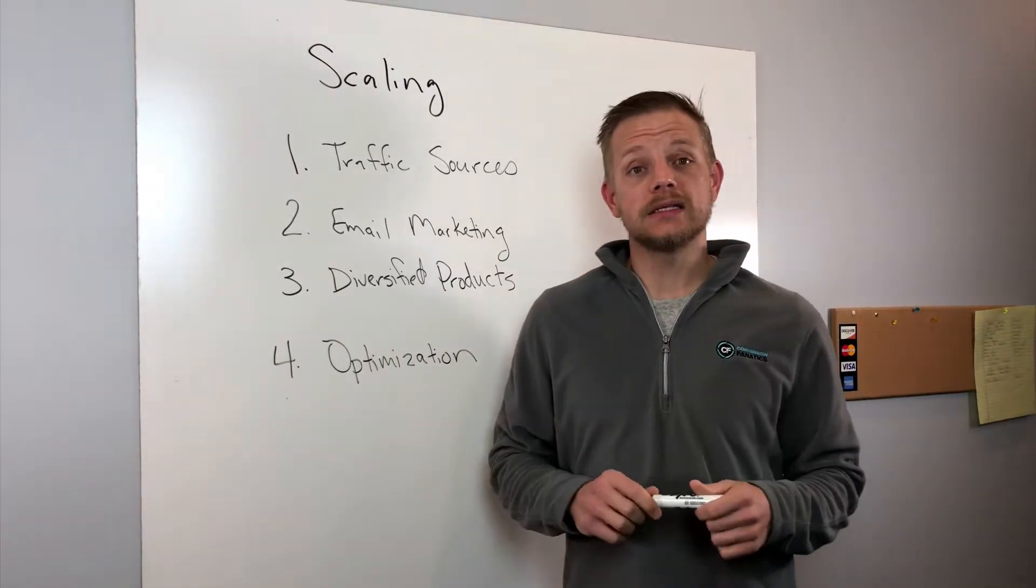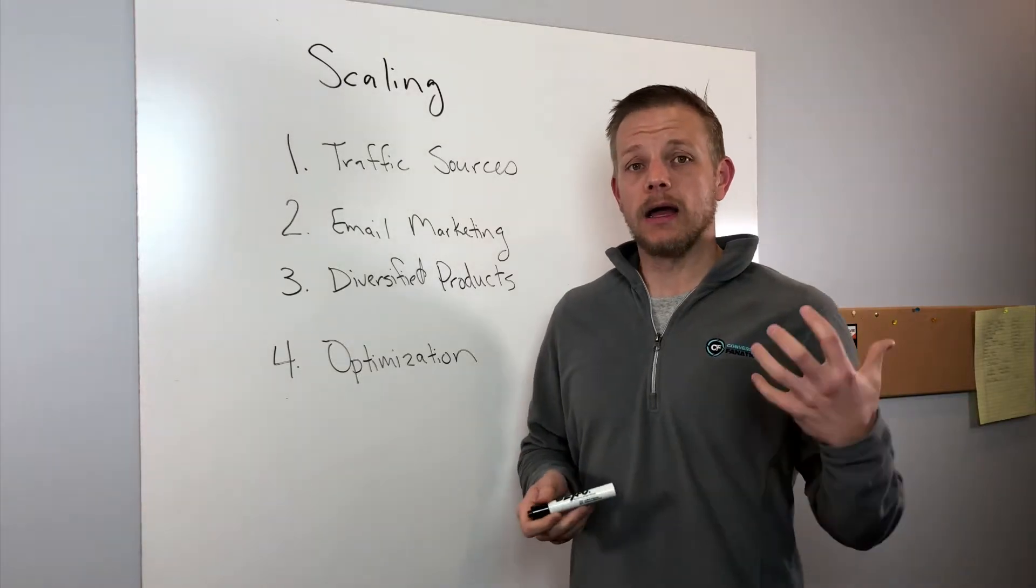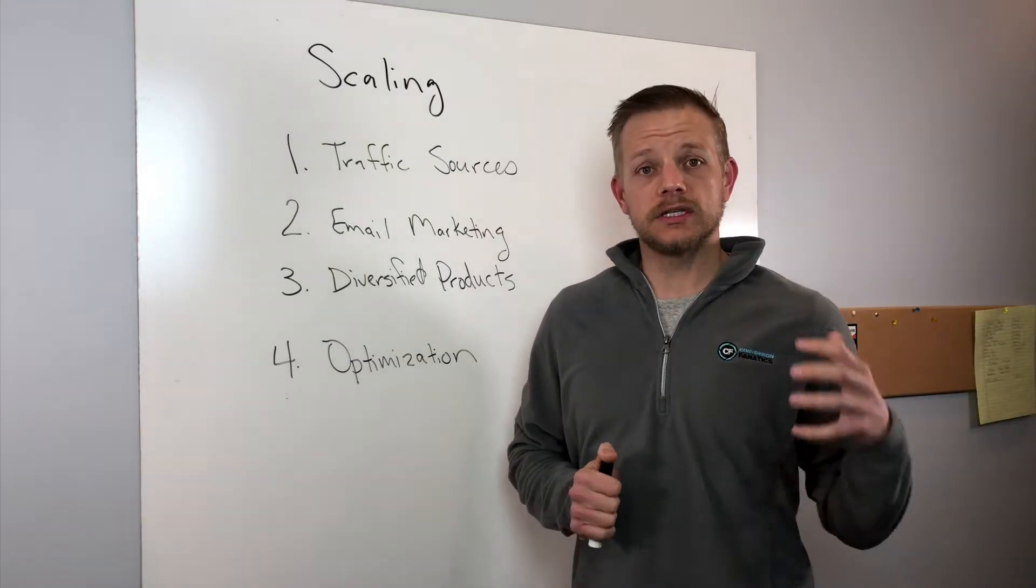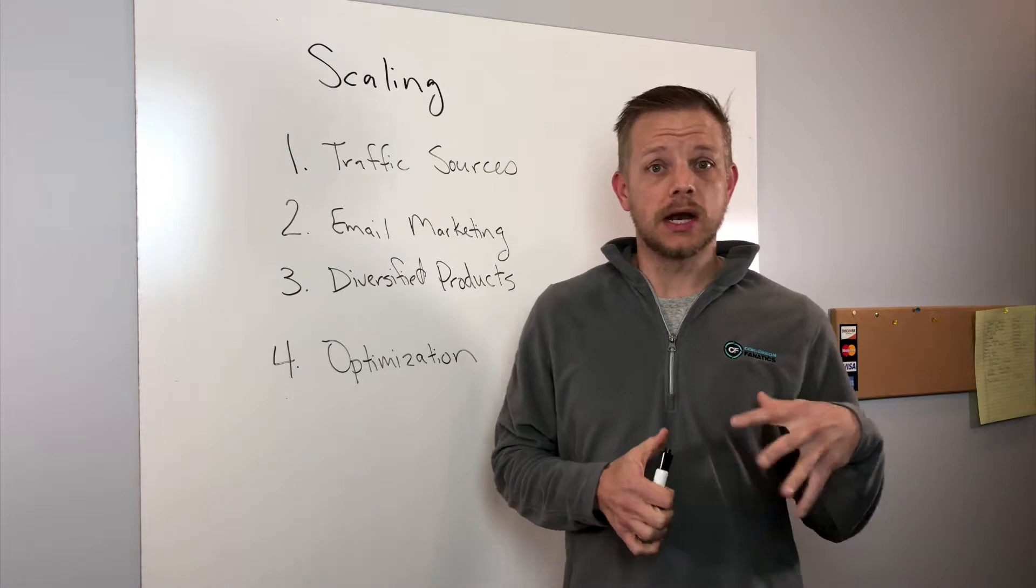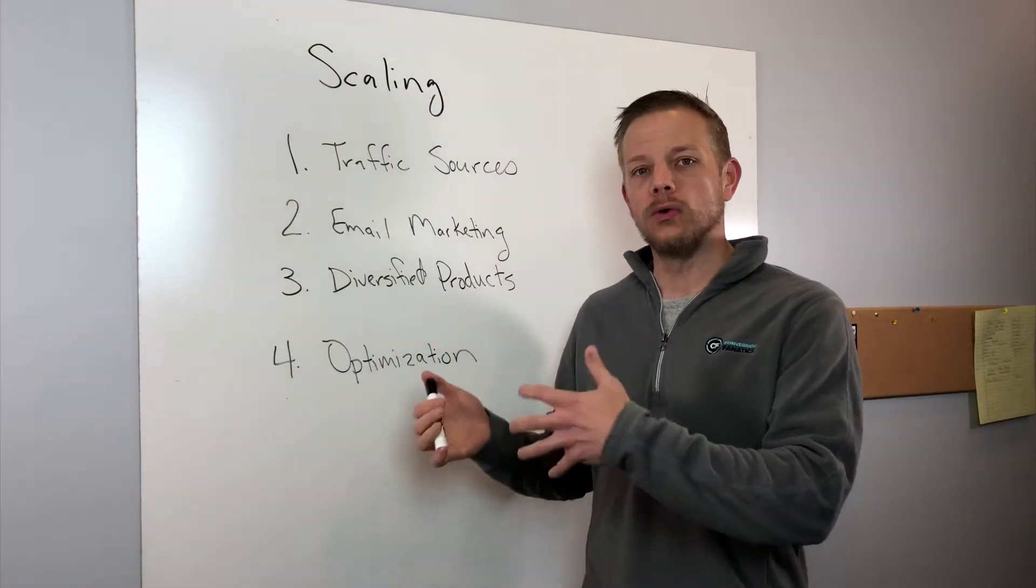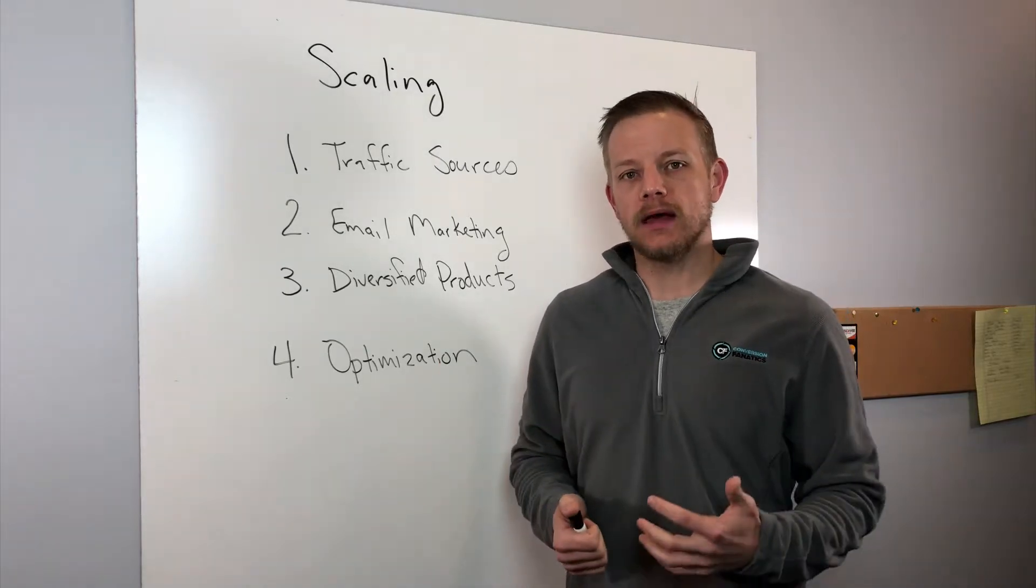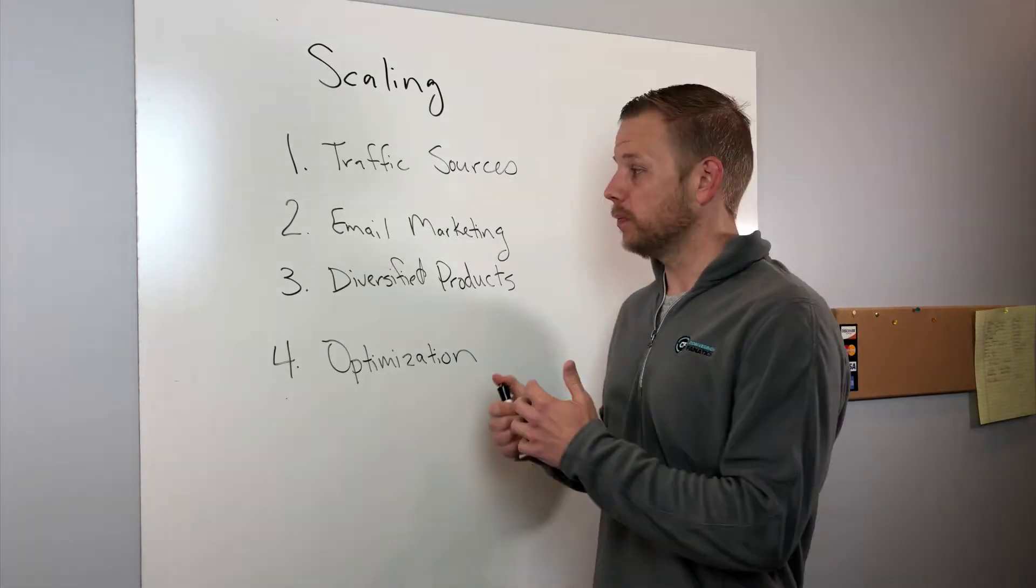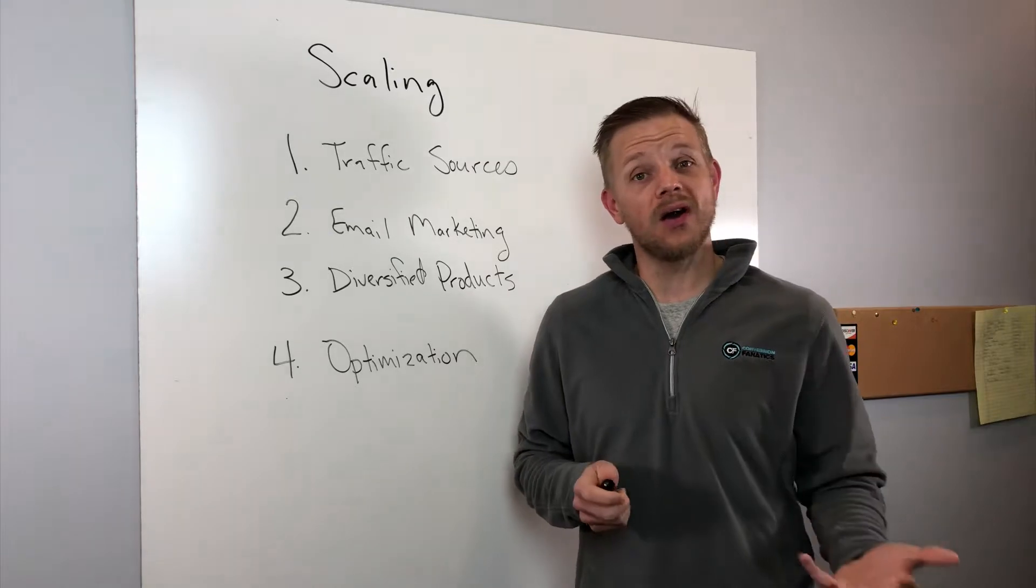Number three is they've got diversified products. They're not just like traffic sources. They don't have all their eggs in one basket because you need to maximize your average order value in order to have the scalability that you are looking to get because one product, it's very hard.